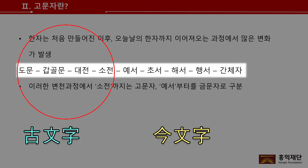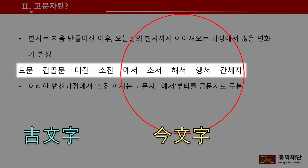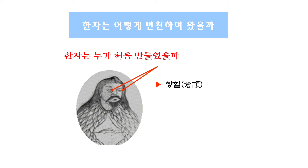예서 이전까지를 일반적으로 고문자라고 부릅니다. 예서 이후부터는 금문자, 금자를 써서 금문자로 구분합니다. 이유가 뭘까요? 그림을 보면서 다시 설명드릴게요. 고문자에 대한 기본적인 상식입니다.